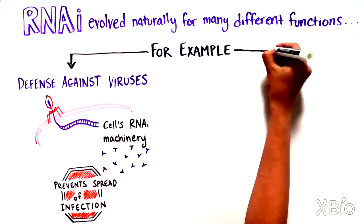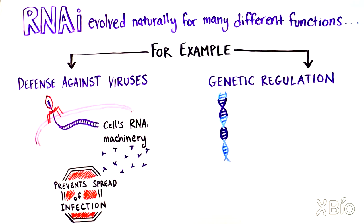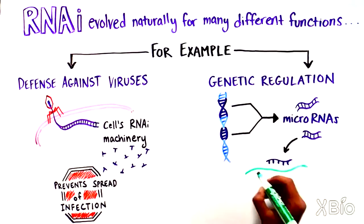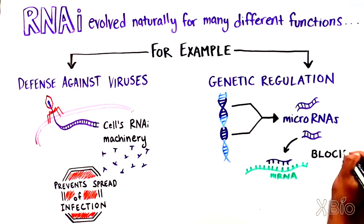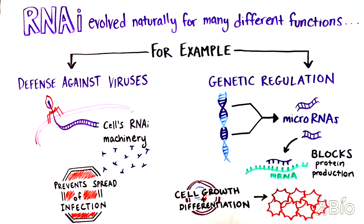RNAi is also an elegant form of genetic regulation. MicroRNAs are small RNA fragments encoded throughout the genome of many organisms, and they can bind to certain RNA molecules creating double-stranded RNA, which ultimately blocks protein production. MicroRNAs play critical roles in numerous cellular functions such as cell growth and differentiation, and have been implicated in various diseases such as cancer.